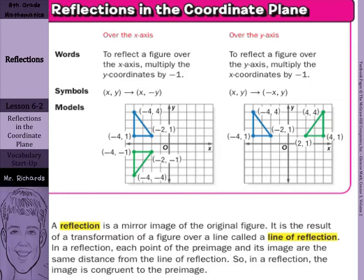We'll start right off with our key concept. When we reflect over the x-axis, which is our horizontal axis — our left-right axis — we're told we can multiply the y-coordinates by negative 1. Over the y-axis, you're going to multiply the x-coordinates by negative 1 in order to get this done.